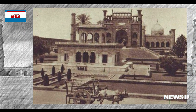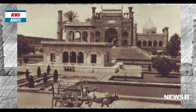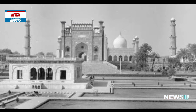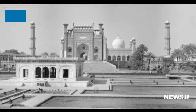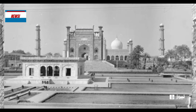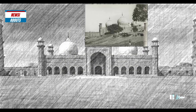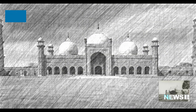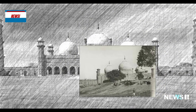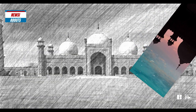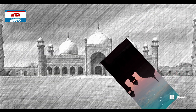The construction of the mosque began in 1671 under the orders of Mughal Emperor Aurangzeb and was completed in 1673. The mosque was built to commemorate the victory of Aurangzeb over the Maratha Empire in the Battle of Samagirha.